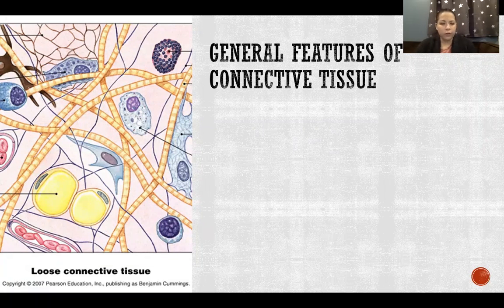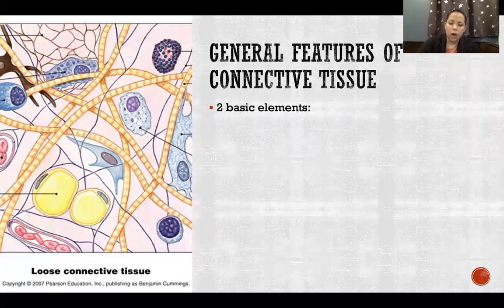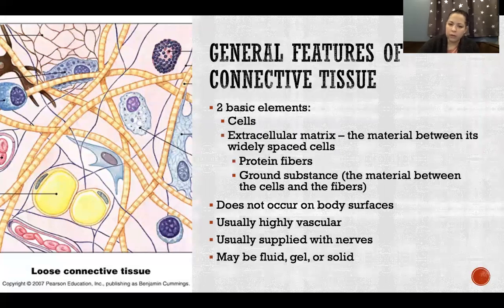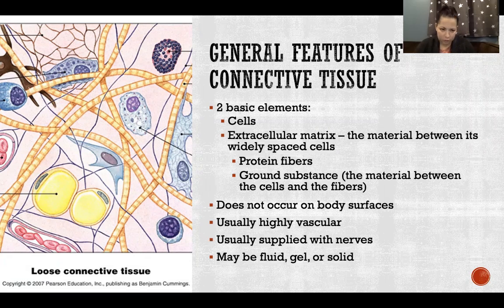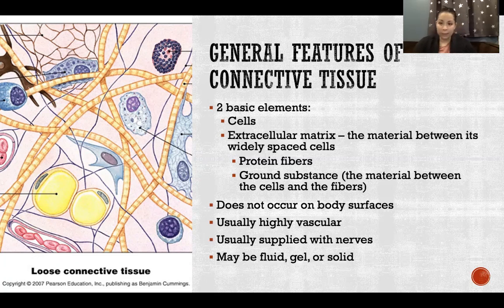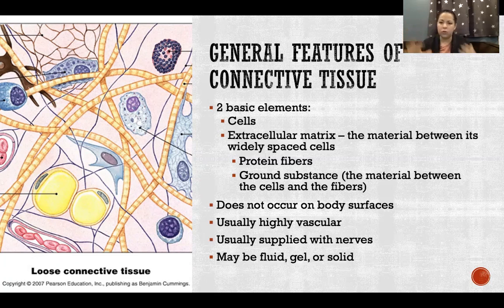There are a few general features of connective tissue. Connective tissue has two basic elements: cells and extracellular matrix. Any connective tissue is made up of those two things. Depending on what type of connective tissue it is, it will have different kinds and amounts of cells and different kinds of extracellular matrix. The extracellular matrix is the material between the cells — the cells are widely spaced and scattered throughout the tissue, and the extracellular matrix is everything that exists in the spaces between those cells.